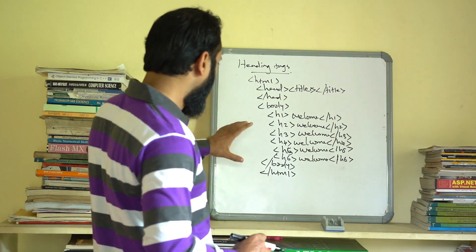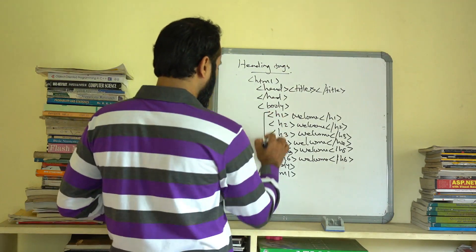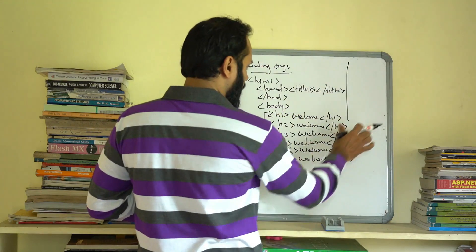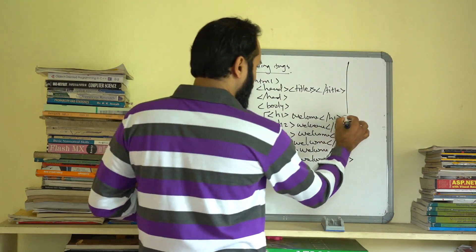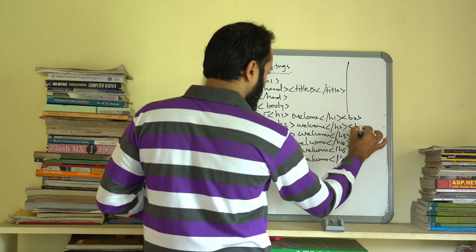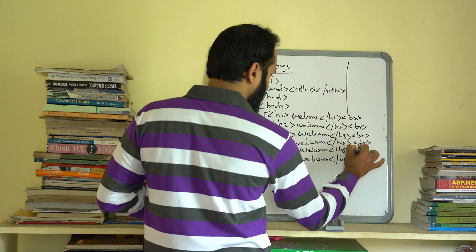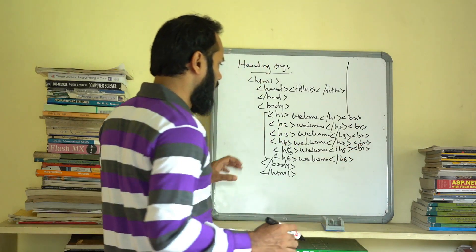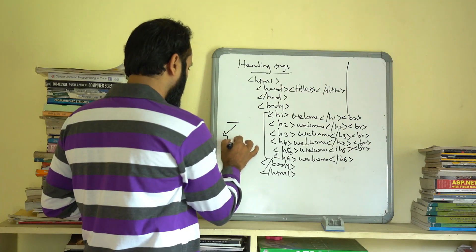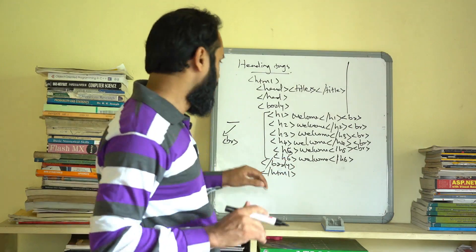I am going to show the output. Notice that when we want content on a new line, we use the BR tag. The BR tag creates a line break. There is no need to close the BR tag — it is a self-closing tag, just like the BR tag.